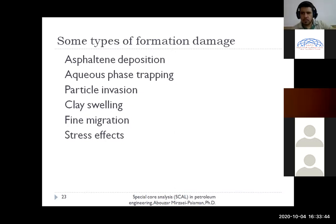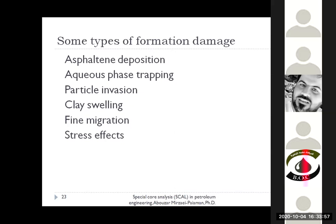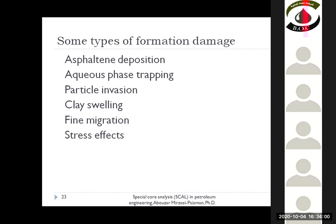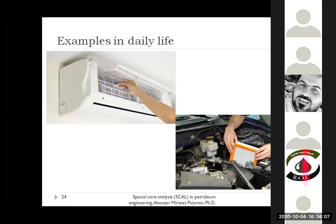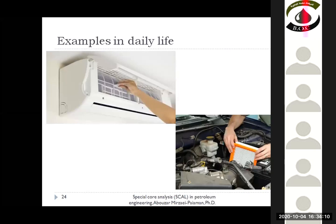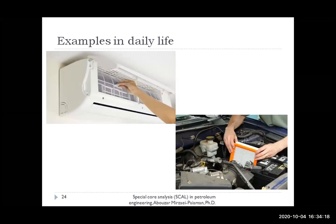We have several types of formation damage. The most important ones include clay swelling, fine migration during production, particle invasion during drilling, and distress effects during production. A simple everyday analogy: an air conditioning filter is a porous medium with some permeability. When contaminated by dust particles, its permeability decreases, it cannot transfer enough air, and we need more pressure drop. This is an example of formation damage in daily life.